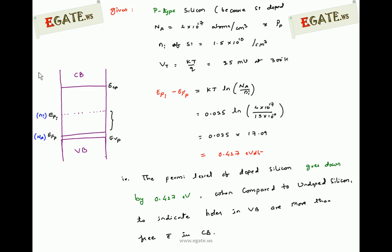The relation between the intrinsic Fermi level EFI and the P-type Fermi level EFP is: EFI − EFP = kT × ln(Na / ni). With kT = 0.025 V, Na = 4 × 10^17, and ni = 1.5 × 10^10, the calculation gives EFI − EFP = 0.427 volts. Therefore, the Fermi level of doped P-type silicon is lower by 0.427 electron volts compared to the intrinsic Fermi level of undoped silicon.